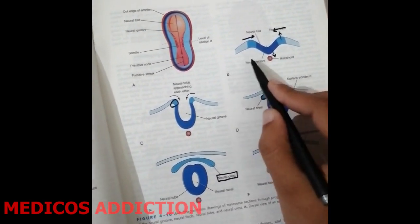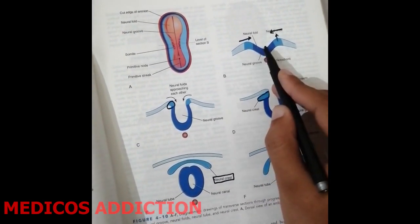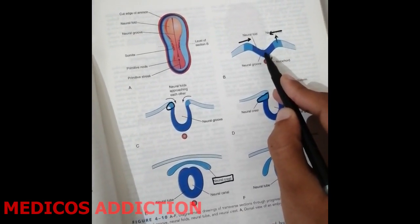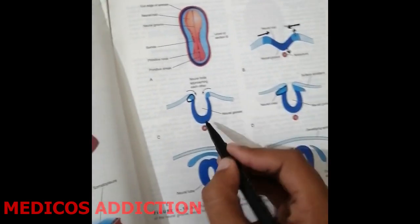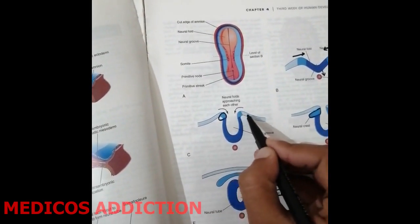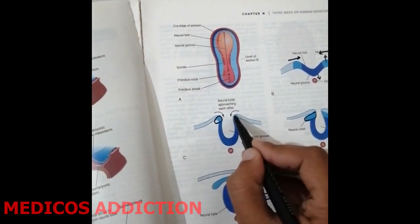Now in this diagram, this is the diagram of ectoderm. The ectoderm depresses in the center part and side margins of ectoderm elevate in this fashion. In this diagram we can see that the elevated portion of the ectoderm come close to each other.